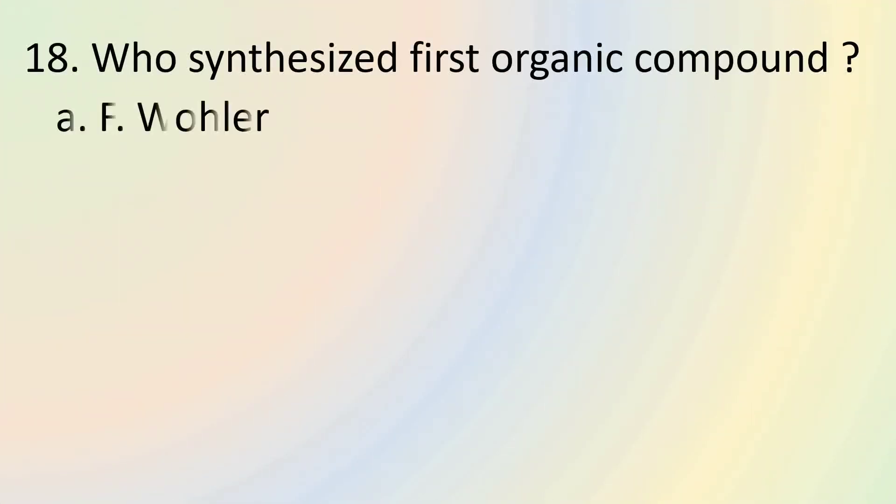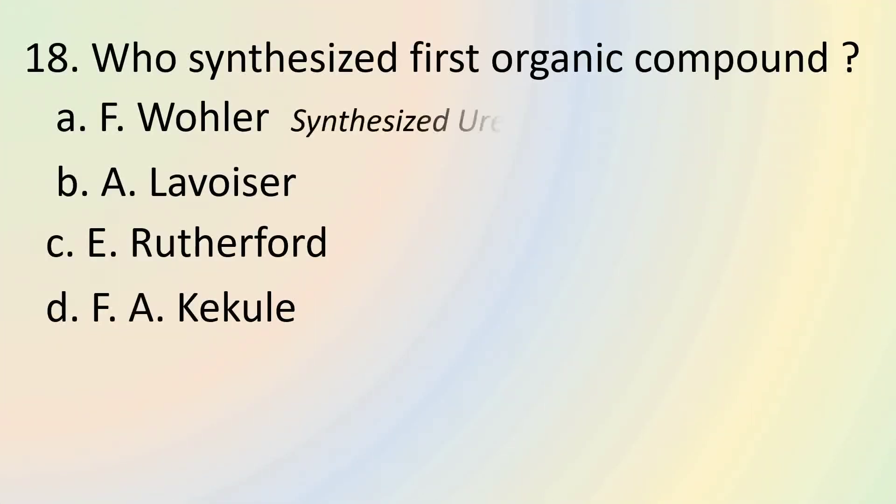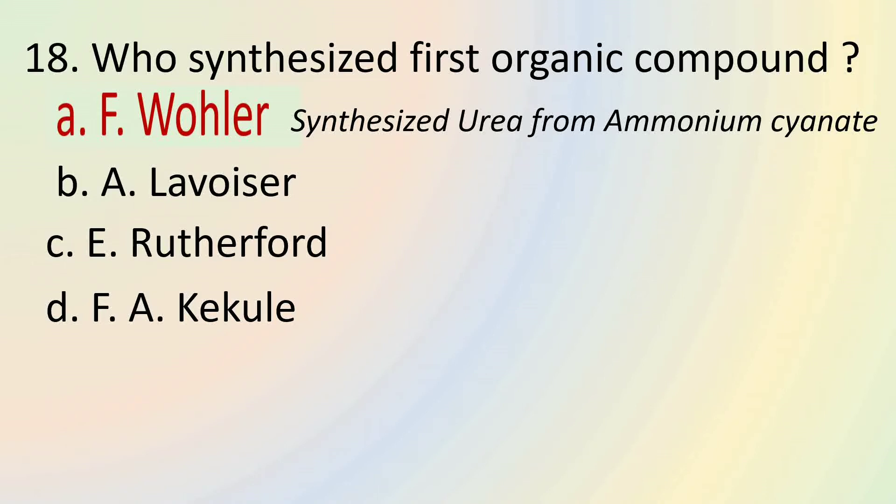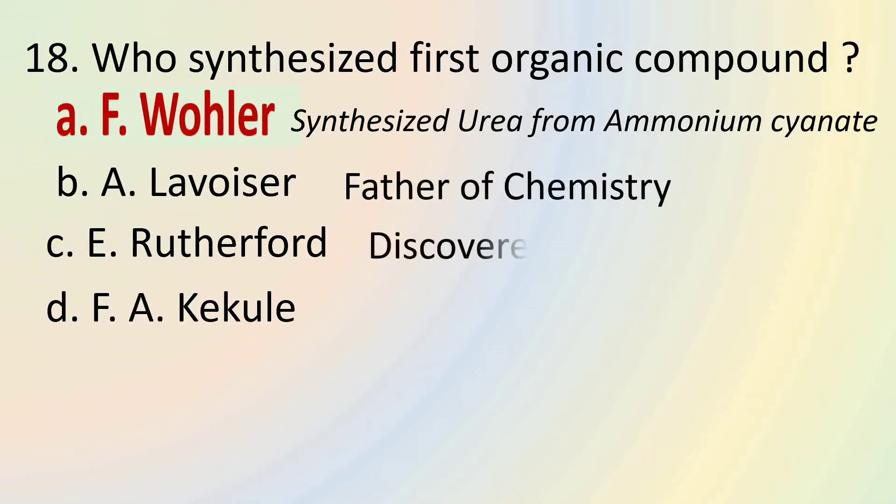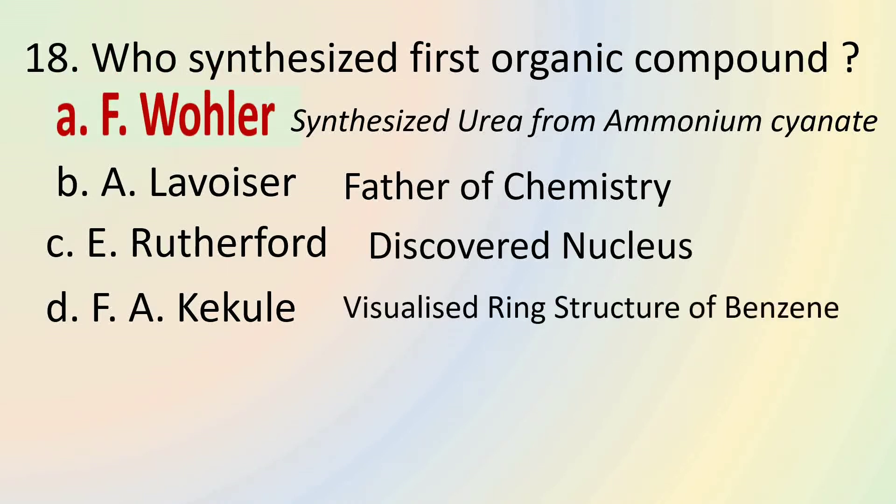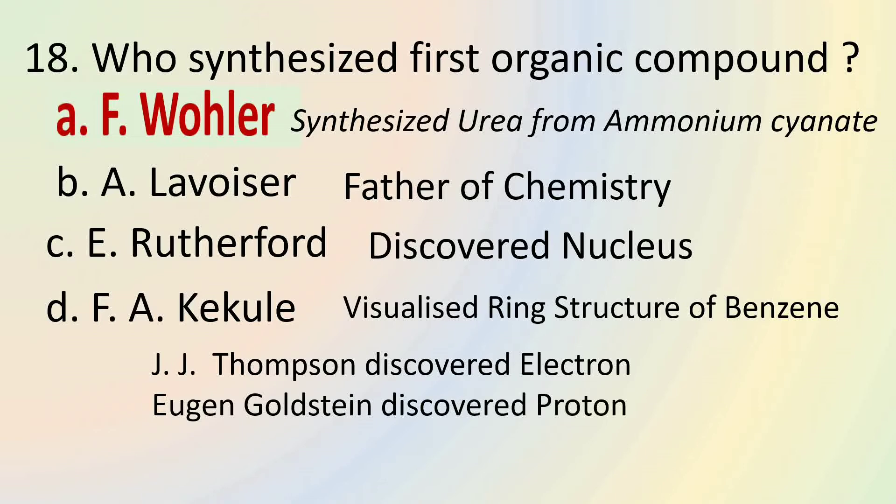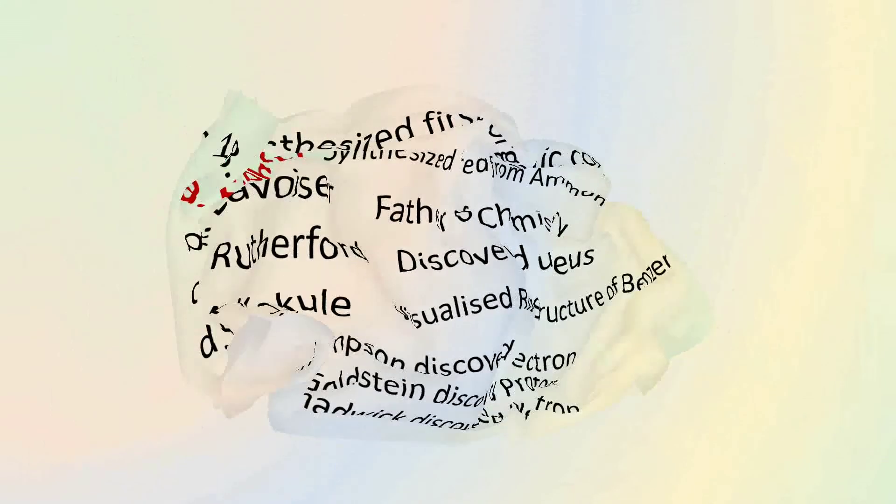Question number 18 asks, who synthesized first organic compound? Friedrich Wohler synthesized first organic compound. The first organic compound to be synthesized was urea. Urea was synthesized from ammonium cyanate. Antoine Lavoisier is considered father of chemistry. Ernest Rutherford discovered nucleus. And Friedrich August Kekule visualized ring structure of benzene. Similarly, J.J. Thomson discovered electron. Eugen Goldstein discovered proton, and James Chadwick discovered neutron.